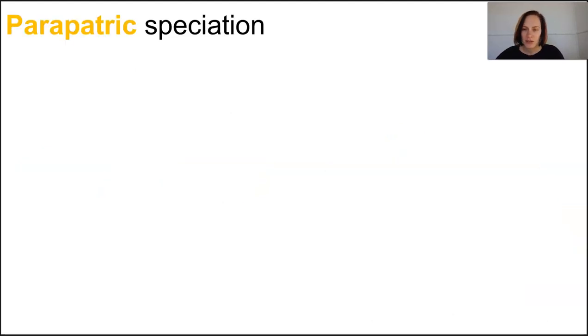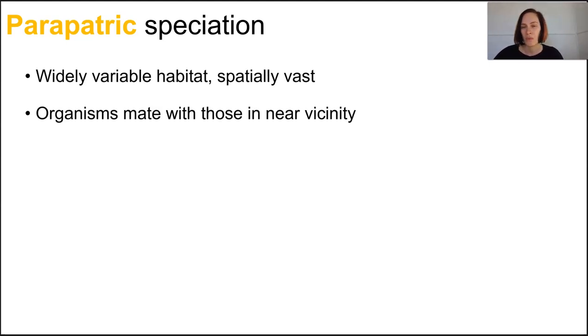Parapatric speciation is quite rare, and while it doesn't need any rigid physical or geographical barriers, it's still a kind of geographical isolation. Consider a habitat that's widely variable, spatially vast, spanning a huge range of micro habitats. This means that organisms are only inclined to mate with those in the immediate vicinity.